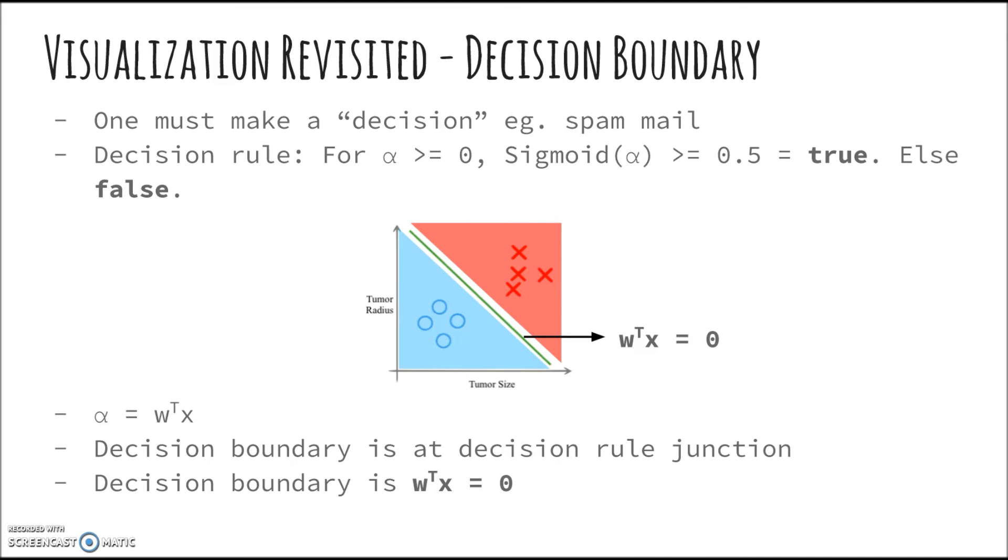Remember that the y-intercept of the sigmoid function is (0, 0.5). So, as soon as we input 0 into the sigmoid function, we get an output class of 1. Anything smaller than 0 and we get an output class of 0. Now, recall that we use the weighted sum w^T x as the input to our sigmoid function.